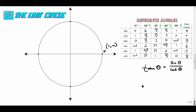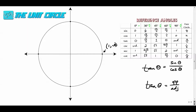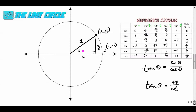Why is that? If we go all the way back to ninth or eighth grade geometry, SOHCAHTOA told us that tangent was opposite over adjacent. If we drew a little reference triangle and put theta here, the hypotenuse is one because that's the radius. Calling the point (x, y), we go over x units and up y units, so the tangent of this angle is y over x — opposite over adjacent.